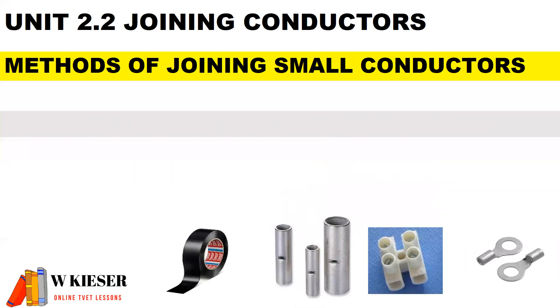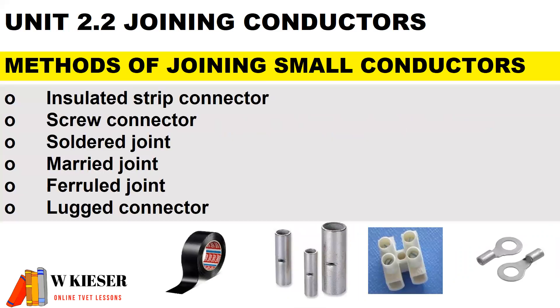Some methods of joining small conductors: we have insulated strip connectors, screw connectors, solder joint, married joint, ferrule joint, and lugged connector.